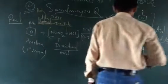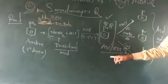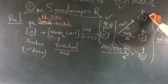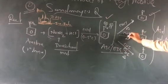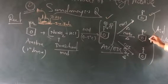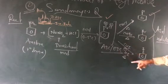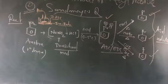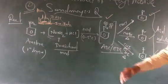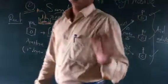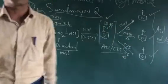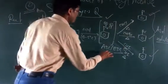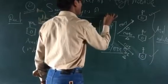After the formation of the diazonium salt, addition of copper chloride gives chlorobenzene, addition of copper bromide gives bromobenzene, and addition of copper iodide gives iodobenzene. This type of reaction is known as the Sandmeyer reaction.